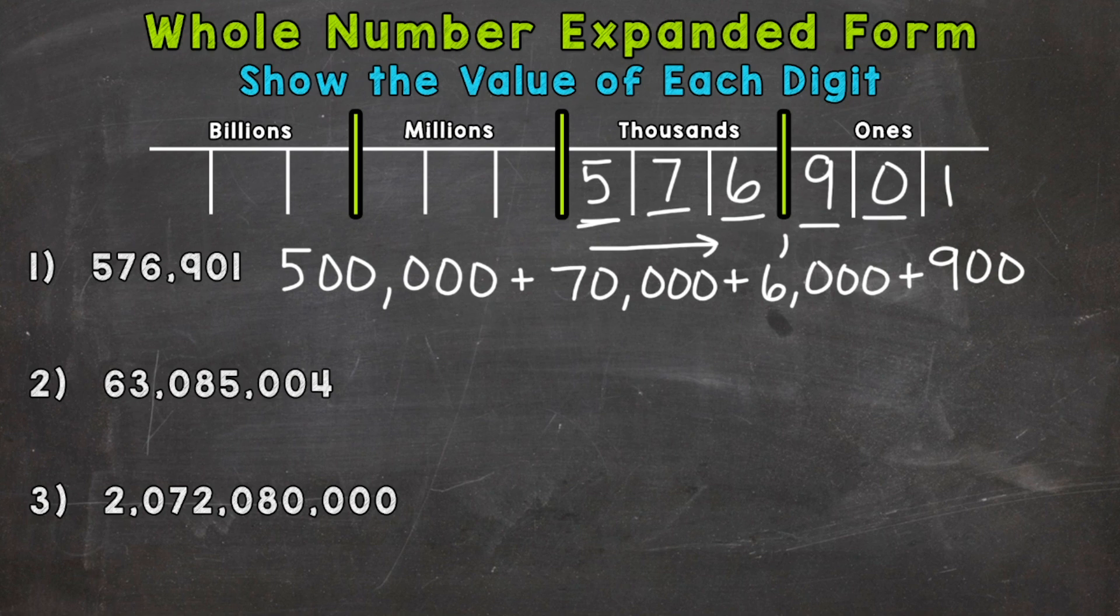We then have a zero in the tens place. We don't need to represent that zero within our expanded form. So we would go to the next digit, which is a one in the ones place. So it has a value of one. And now we have number one put into expanded form. We showed the value of each digit.